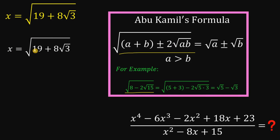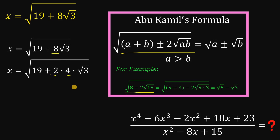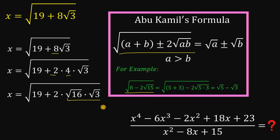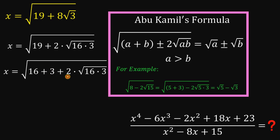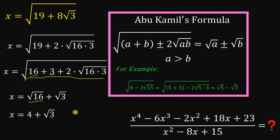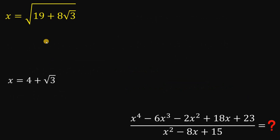Let's use this to simplify x equals square root of 19 plus 8 times square root of 3. First, let's break this 8 into 2 times 4, because we need 2. This 4 we can rewrite as square root of 16. Multiplying square root of 16 times square root of 3 gives square root of 48, and 19 is 16 plus 3. This is now the Abou Camille's formula pattern, so x equals square root of 16 plus square root of 3, which simplifies to 4 plus square root of 3.